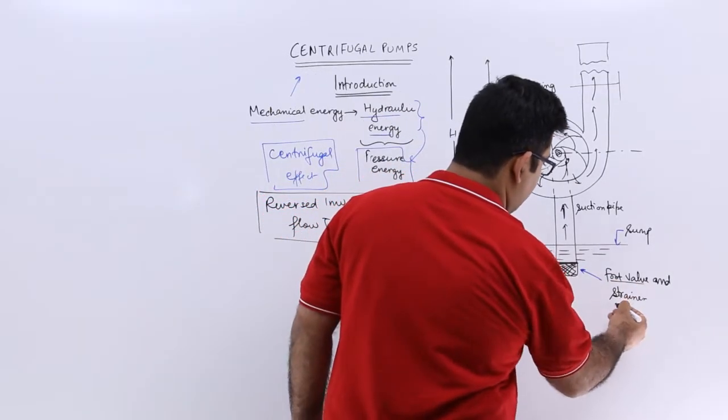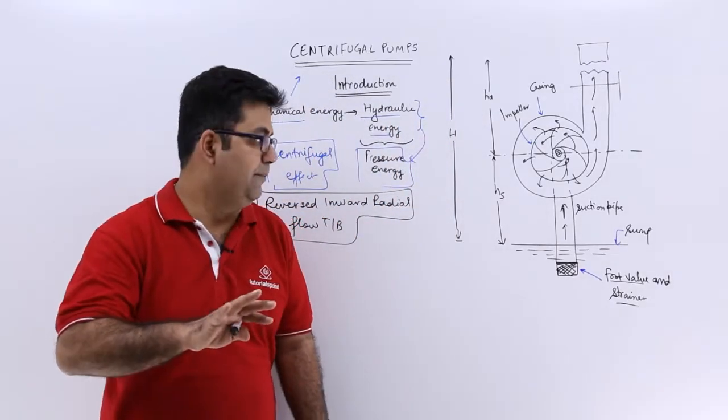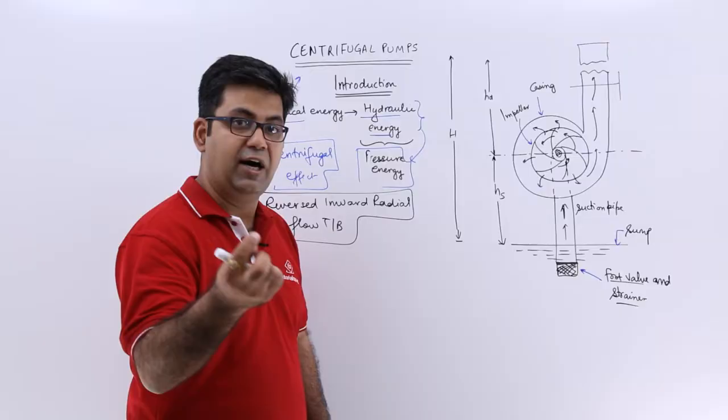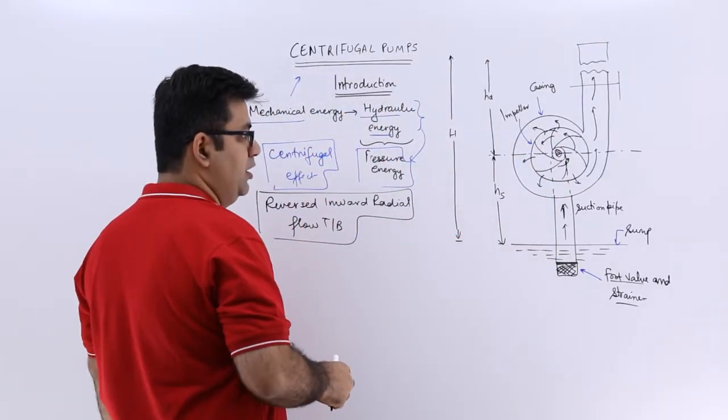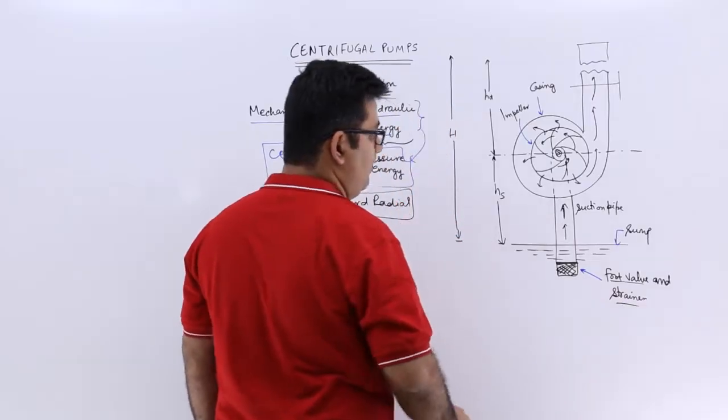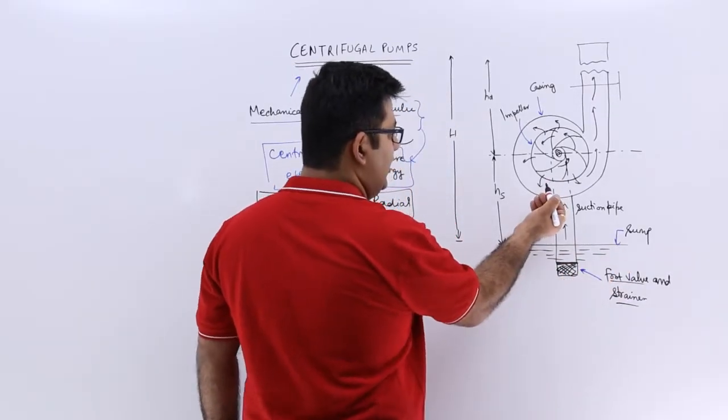This is the foot valve and the strainer which separates all the impurities or hard particles to be entrapped inside these moving parts of the pump. So this acts to the filter. Then this is the sump, the liquid rises up the suction pipe.